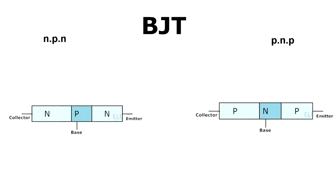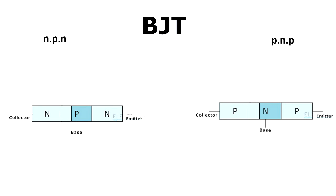So let's talk about the physical structure of the BJT. There are two types of transistor: NPN and PNP. In the case of an NPN type transistor, the P-type semiconductor material is sandwiched between two N-type semiconductor materials. In the PNP type, the N-type is sandwiched between two P-type semiconductor materials. There are three regions: the largest region is called the collector region, the smallest one is called the base region, and the last one is called the emitter region.